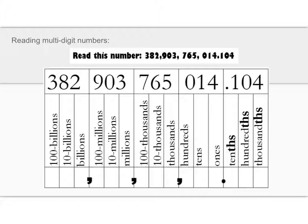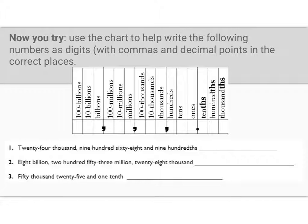So you're going to use a chart like this to try this with some written numbers. I'm going to use this chart to help write the following numbers as digits. You're going to write these digits with commas and decimal points in the correct places. And again, use this chart to help you out. And I'm going to have you pause the video, write what you think the answers are, and then you can check when you think you've finished.